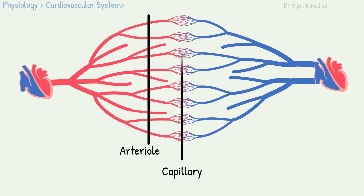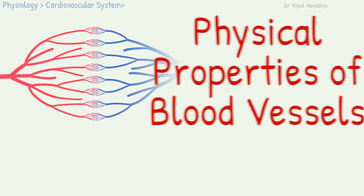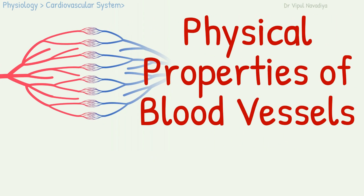Among arterioles, capillaries, and venules, which one do you think has the highest total cross-section area? Capillaries, right? Wrong. We will find out the right answer in this video as we study the various physical properties of blood vessels.